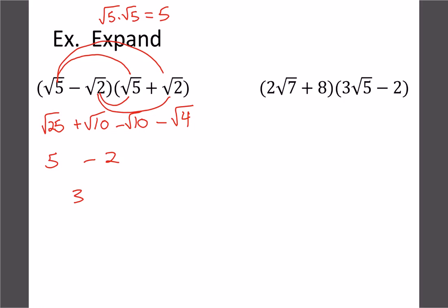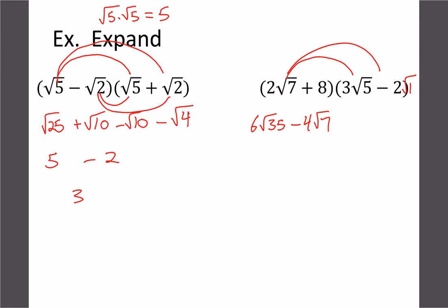We'll come back to these conjugate-style products later when we do harder dividing questions — it's a useful strategy. For the next example, (2 root 7 minus 8)(3 root 5 + 2): 2 root 7 times 3 root 5 is 6 root 35, 2 root 7 times 2 is minus 4 root 7 (since the whole number 2 can be thought of as root 1 times 2, giving root 7), negative 8 times 3 root 5 gives 24 root 5, and 8 times negative 2 gives negative 16. There are no like terms, so that's the final answer.